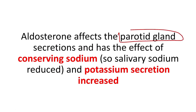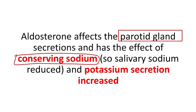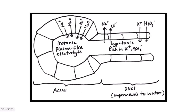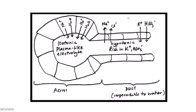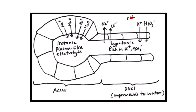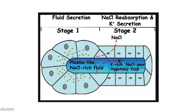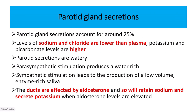Aldosterone affects the parotid gland secretion by conserving sodium in the blood with increased potassium secretion — so within the duct, potassium increases. When aldosterone is more activated, it reabsorbs sodium and chloride from the parotid gland duct and other gland ducts, and secretes more potassium and bicarbonate into the duct. This gives a high potassium, high bicarbonate, and low sodium level in the duct — a potassium-rich, sodium-poor, hypotonic solution.